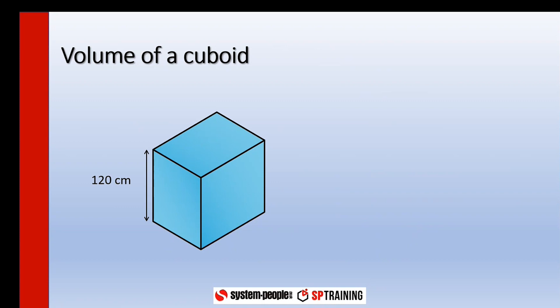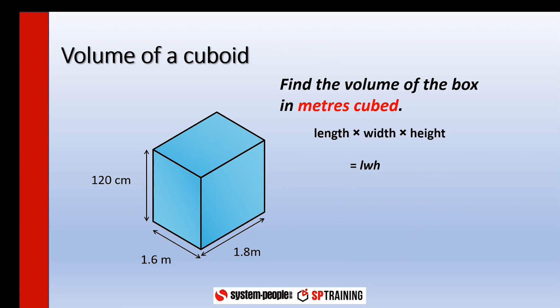So here's the cuboid, it's 120 centimeters tall, it is 1.6 meters wide and its length is 1.8 meters. So imagine this being a cardboard box with those dimensions and you ask what is the volume of it in meters cubed.